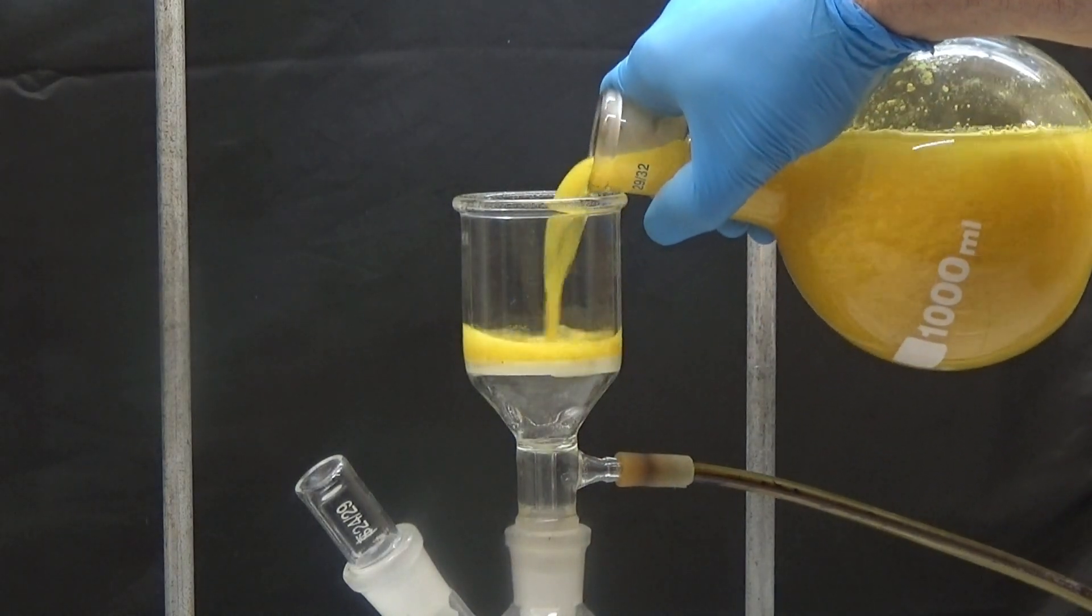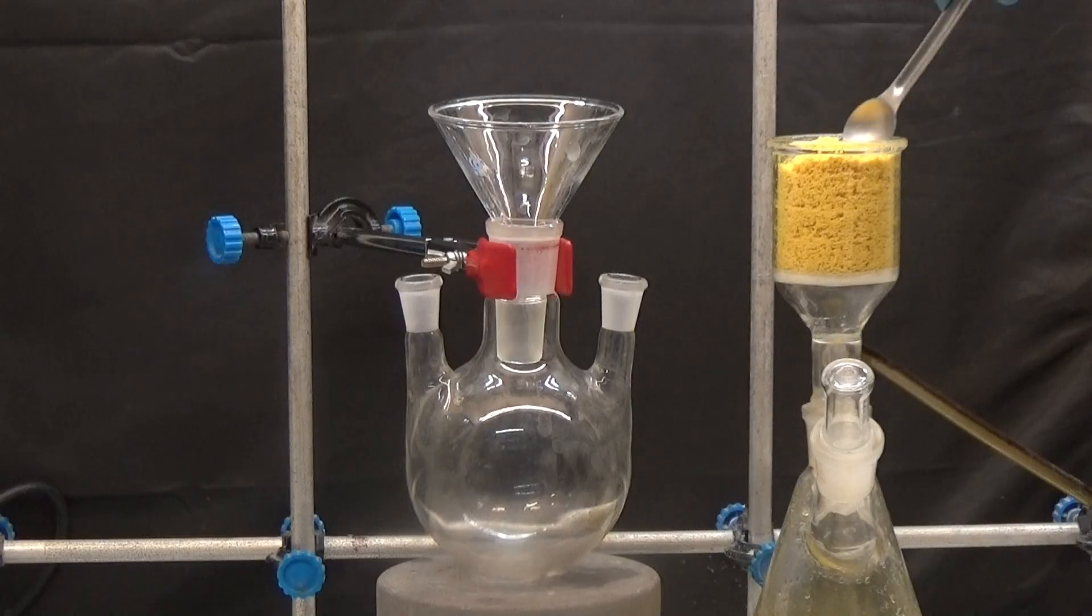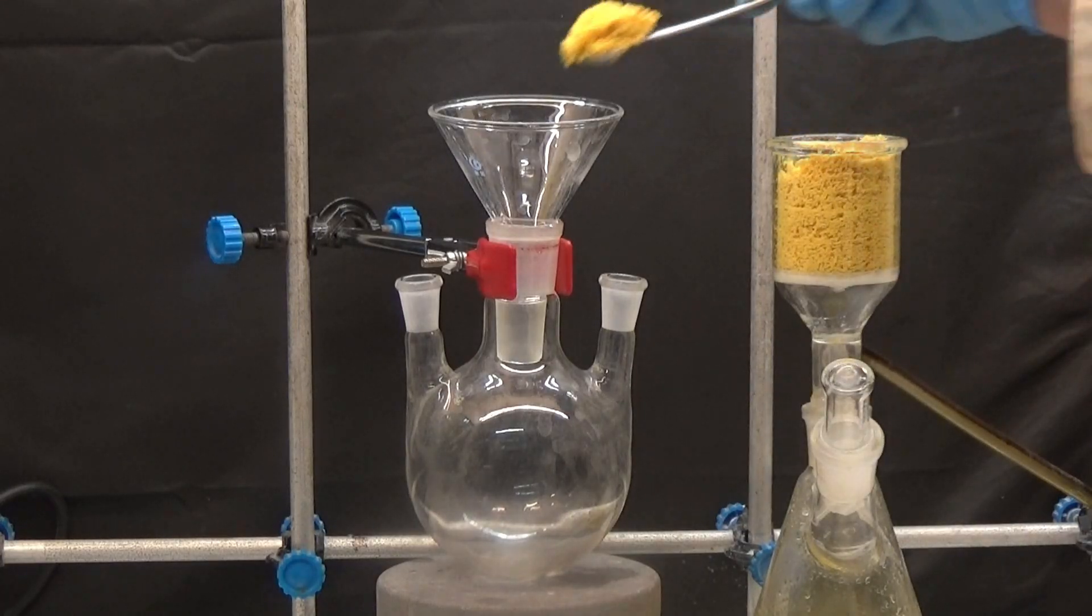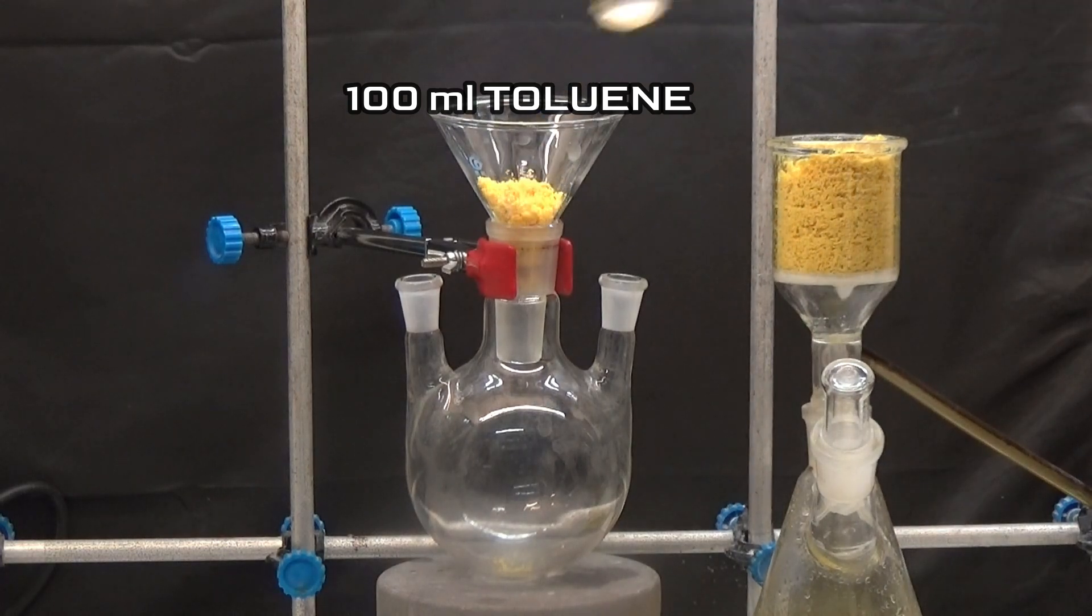Recover the solid by suction and wash with a little water. Without drying the obtained solid, transfer it to a 500ml flask and add 100ml of toluene.